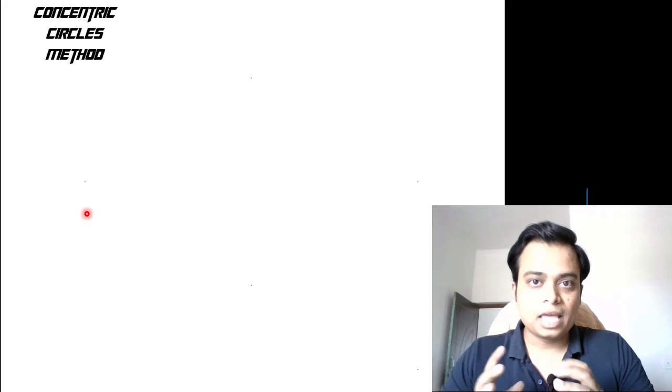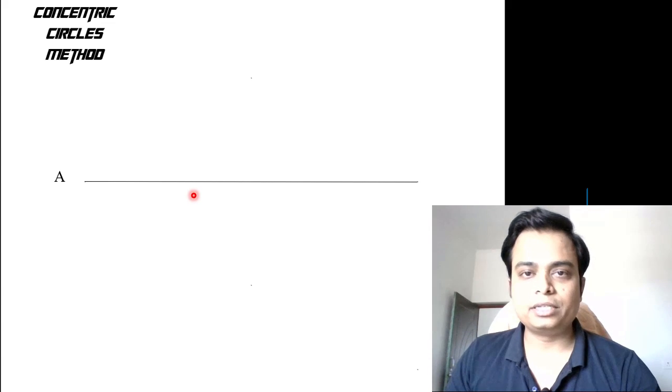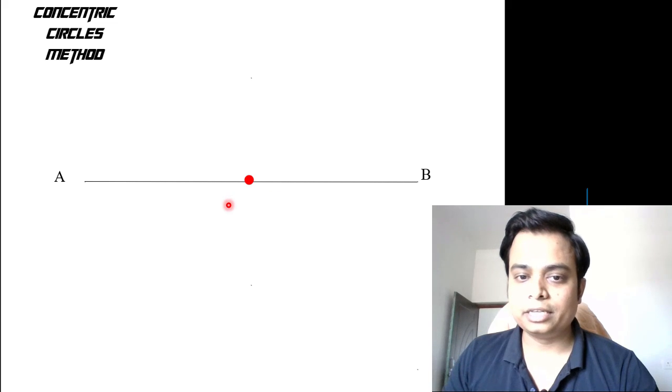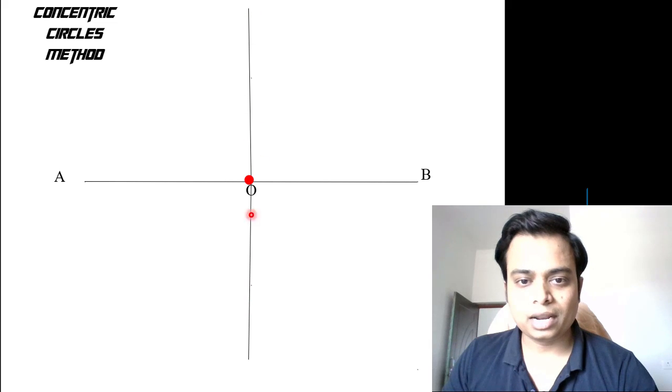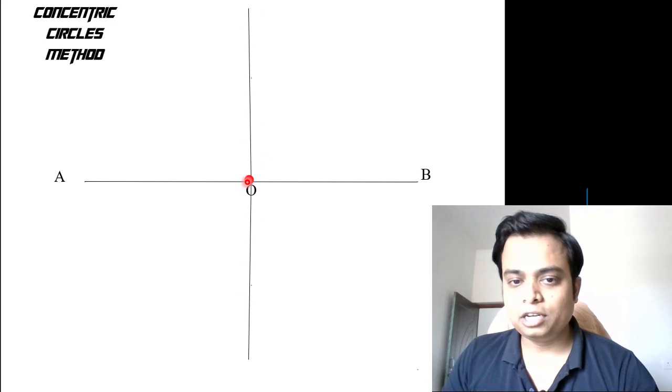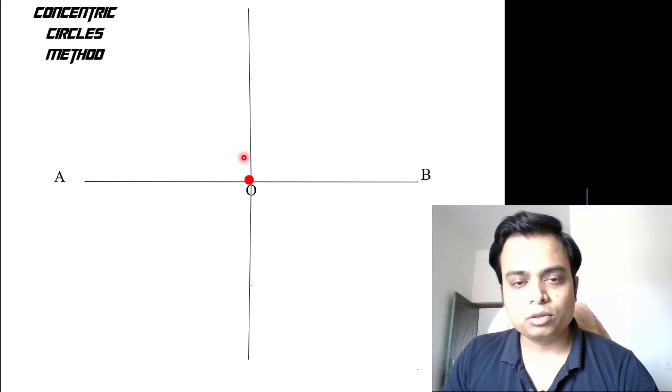If we draw a horizontal line, this is the major axis AB, which has a center O. Through this O we'll have a minor axis. Let me draw a line. The minor axis starts from C and ends at D.